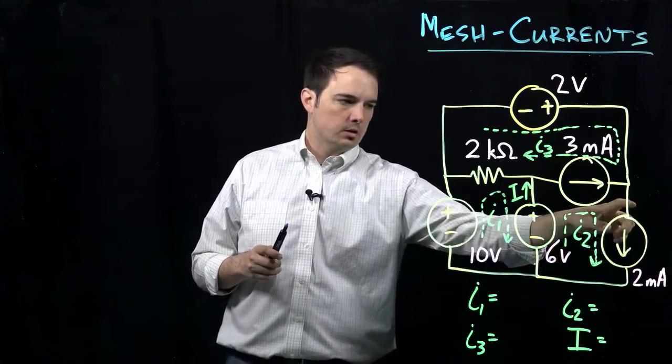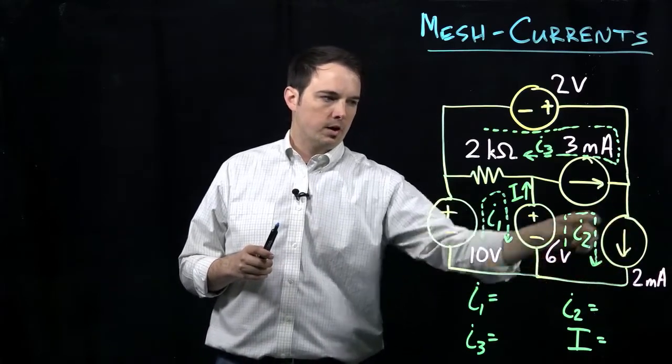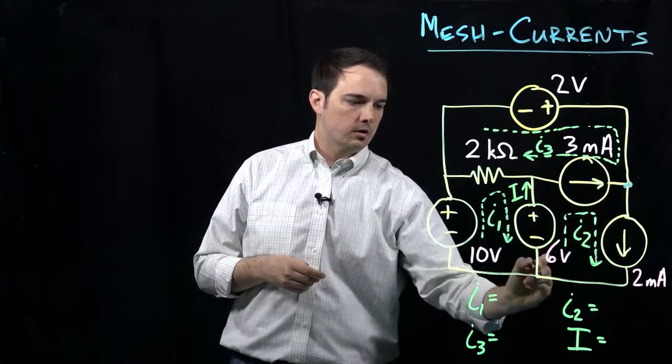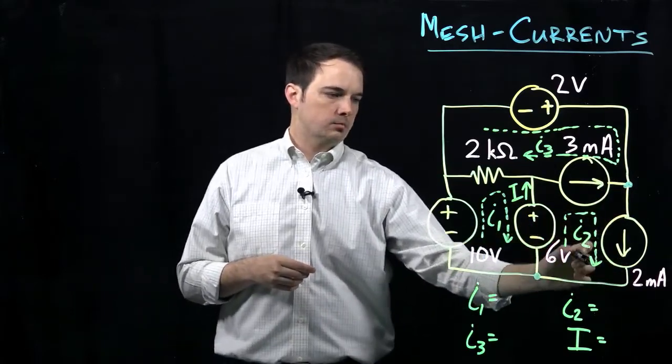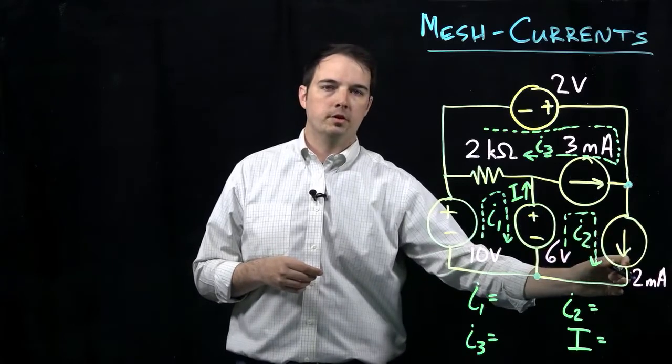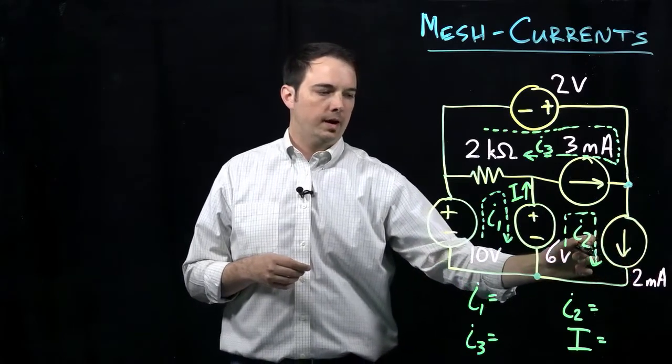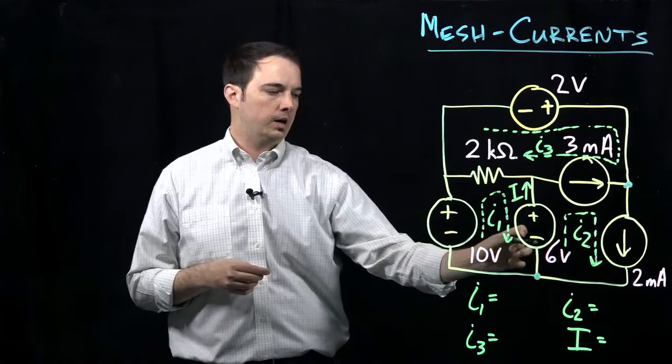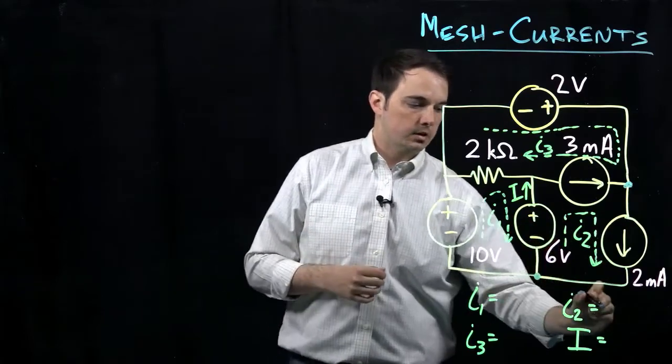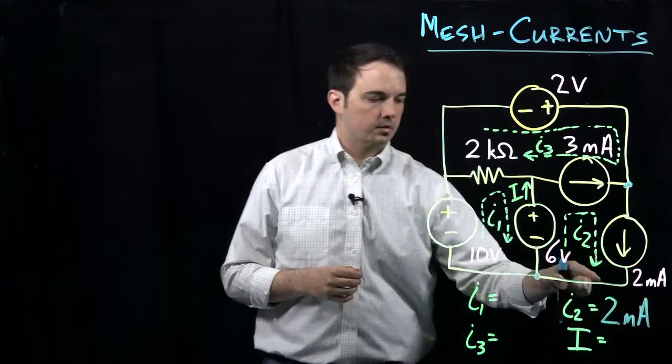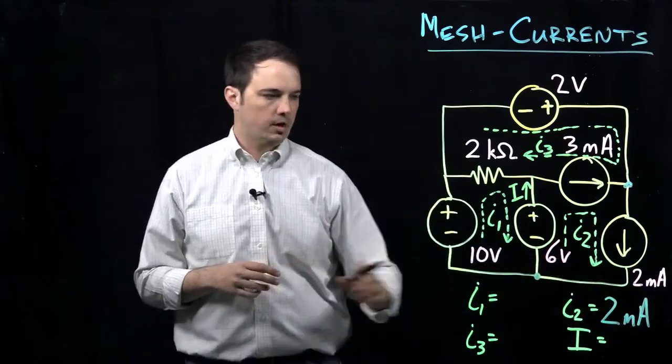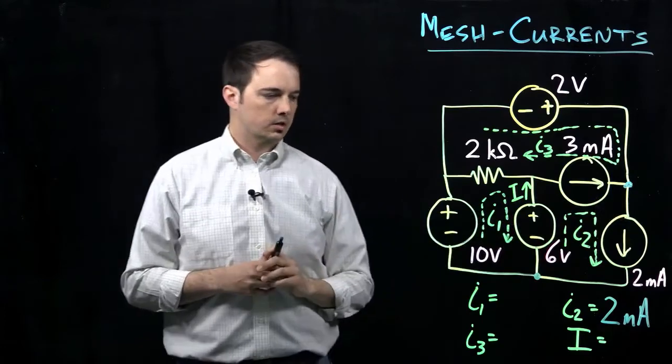Because we have a current source in this branch linking from this node to this node, and that is the same as the branch current I2, which is this 2 milliamp source. So that immediately tells us what that branch current I2 is - it has to be equal to 2 milliamps because of that current source.